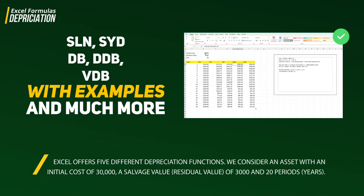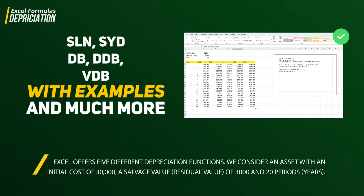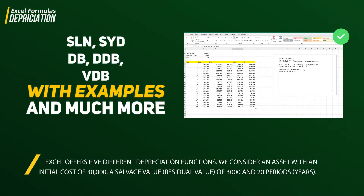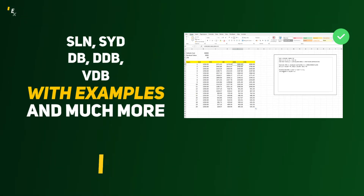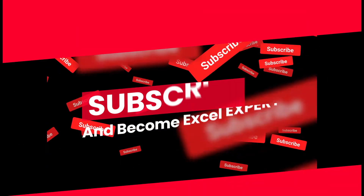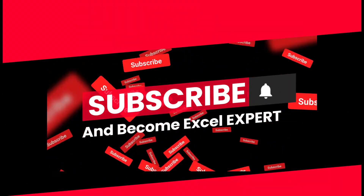We'll cover DDB, which is double declining balance, and VDB, which is variable declining balance. If you haven't subscribed to this channel please do, because we are going to cover each and every aspect of Excel in upcoming days, months, and years. Let's get started.